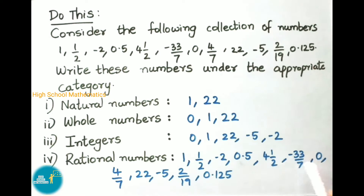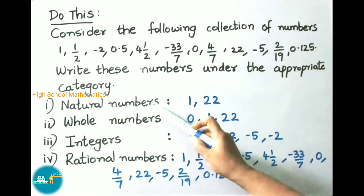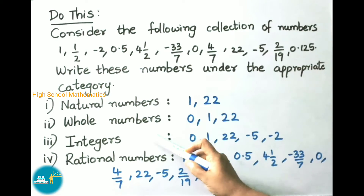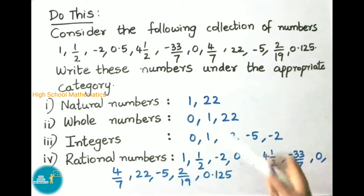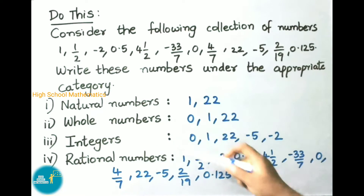We have now converted all the numbers into the form P by Q, so all these are considered rational numbers. We can say that every natural number, whole number, and integer is a rational number.